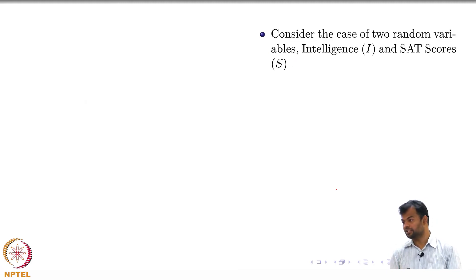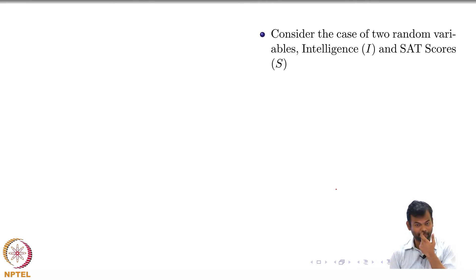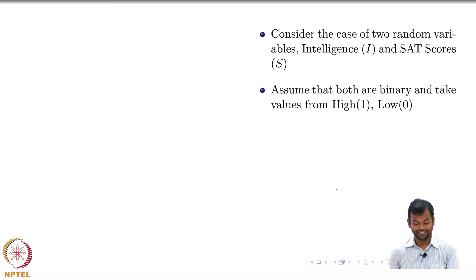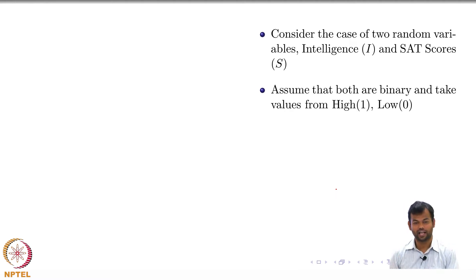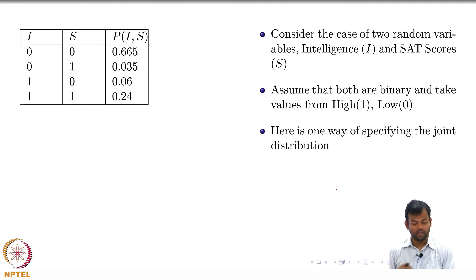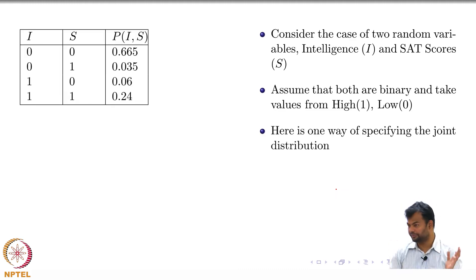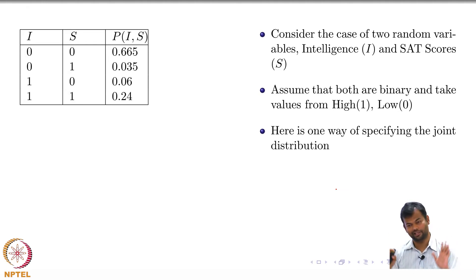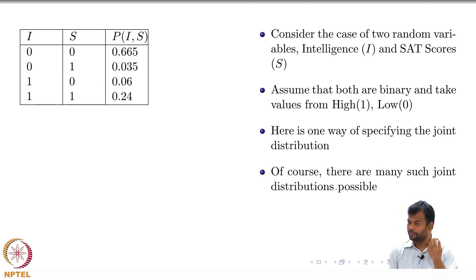Consider the case of two random variables: intelligence and SAT scores. Assume that both are binary and can take on values high and low. One way of specifying the joint distribution is to specify these 4 values. So 2^n is 4 in this case, and of course there are many such joint distributions possible.